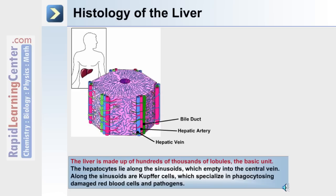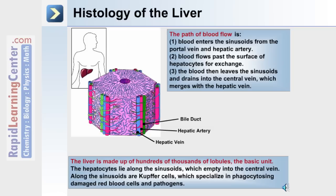Along the sinusoids are Kupffer cells, which specialize in phagocytosing damaged red blood cells and pathogens that have filtered through the liver. The path of blood flow in the liver is as follows: blood enters the sinusoids from the portal vein and hepatic artery, flows past the surface of the hepatocytes for exchange to take place, then leaves the sinusoids and drains into the central vein, which merges with the hepatic vein.